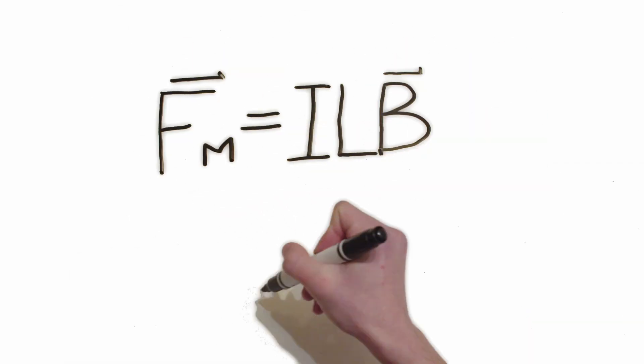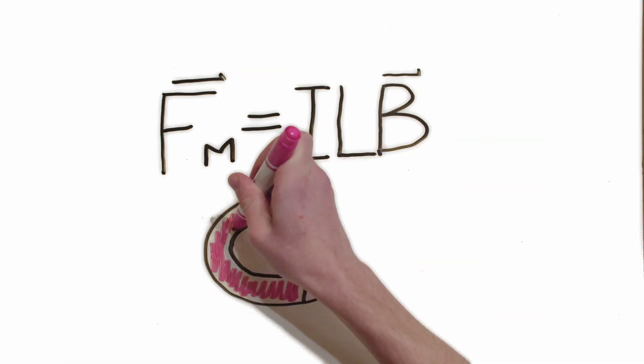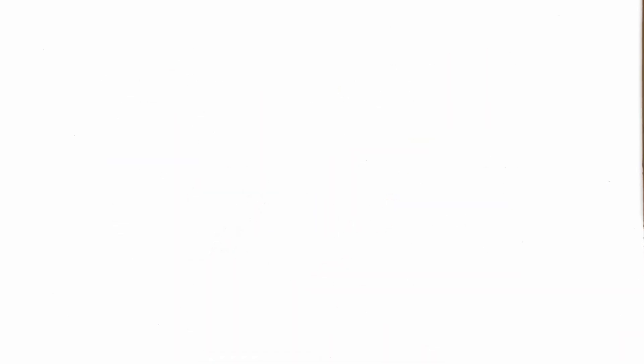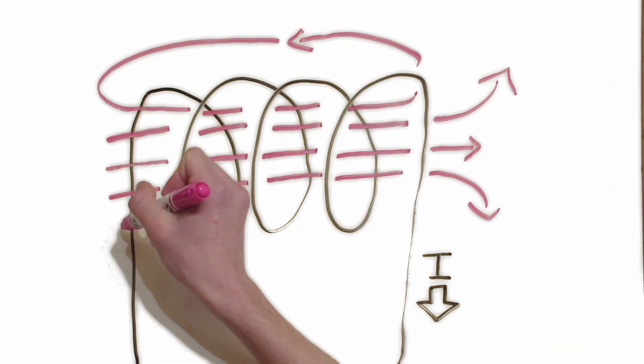As we know, magnetic force is equal to current times the length of the conductor in the magnetic field. And if you run turns through a coil, you'll get a magnetic field through the center.